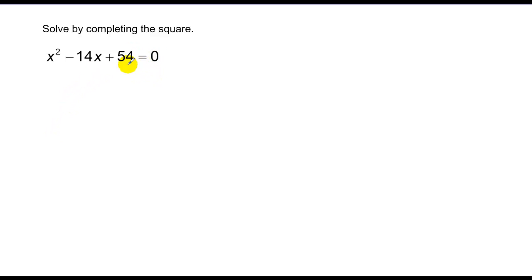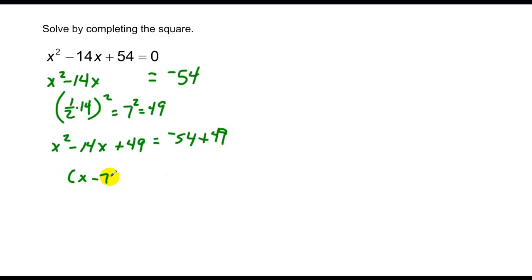Now we do it here. Notice the difference. I don't have any terms on the other side. It's just set equal to zero. But that's okay. I'm going to isolate my variable terms first. So that's x squared minus 14x equals negative 54. Take half of 14 and square it which is 7 squared or 49. I'm going to add that to both sides. So that's x squared minus 14x plus 49 is equal to negative 54 plus 49. Therefore, I have a perfect square of x minus 7 quantity squared is equal to negative 5.